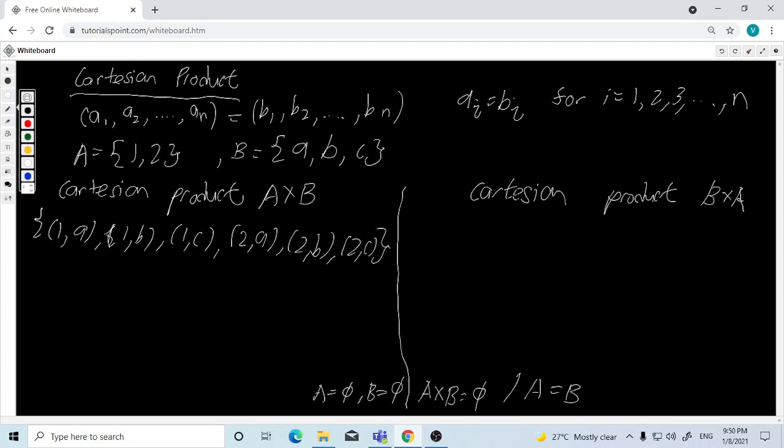So then we need to calculate the Cartesian product B times A. B times A: (a1,a2), (b1,b2), and then (c1,c2). So you can see they are not the same.